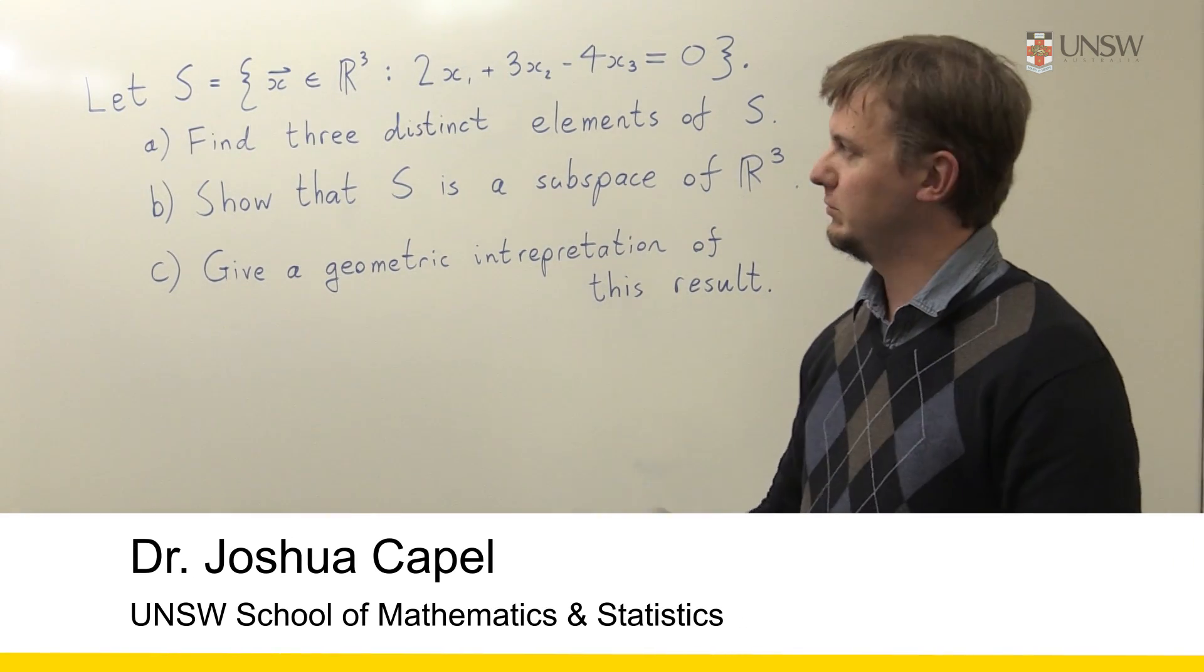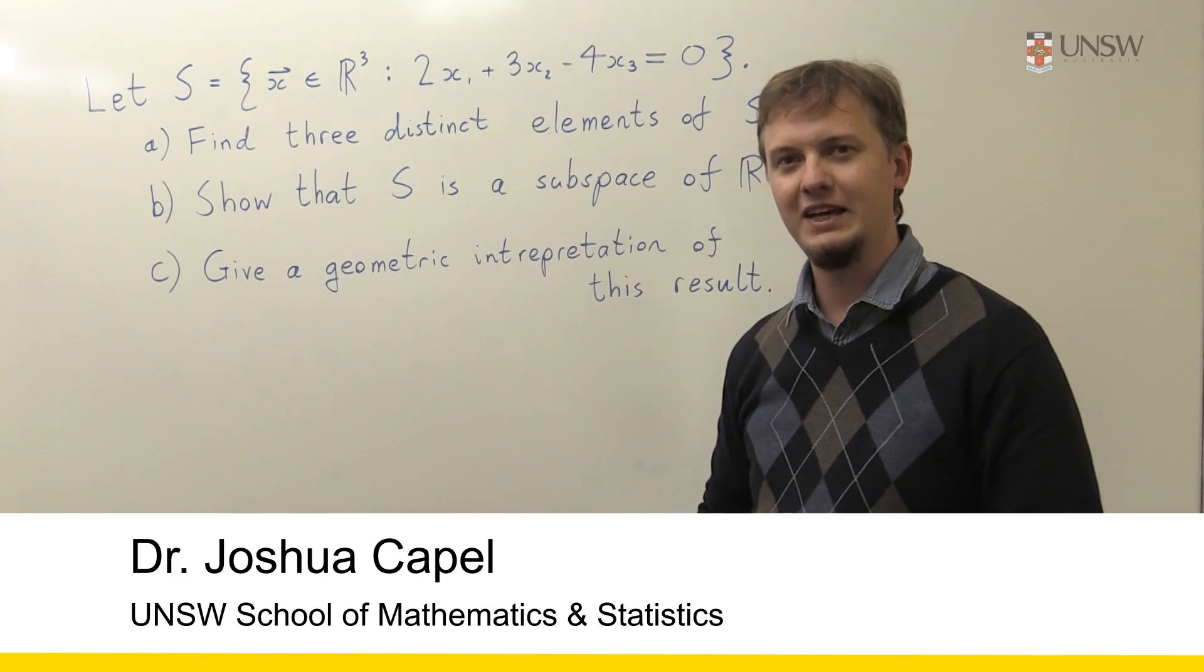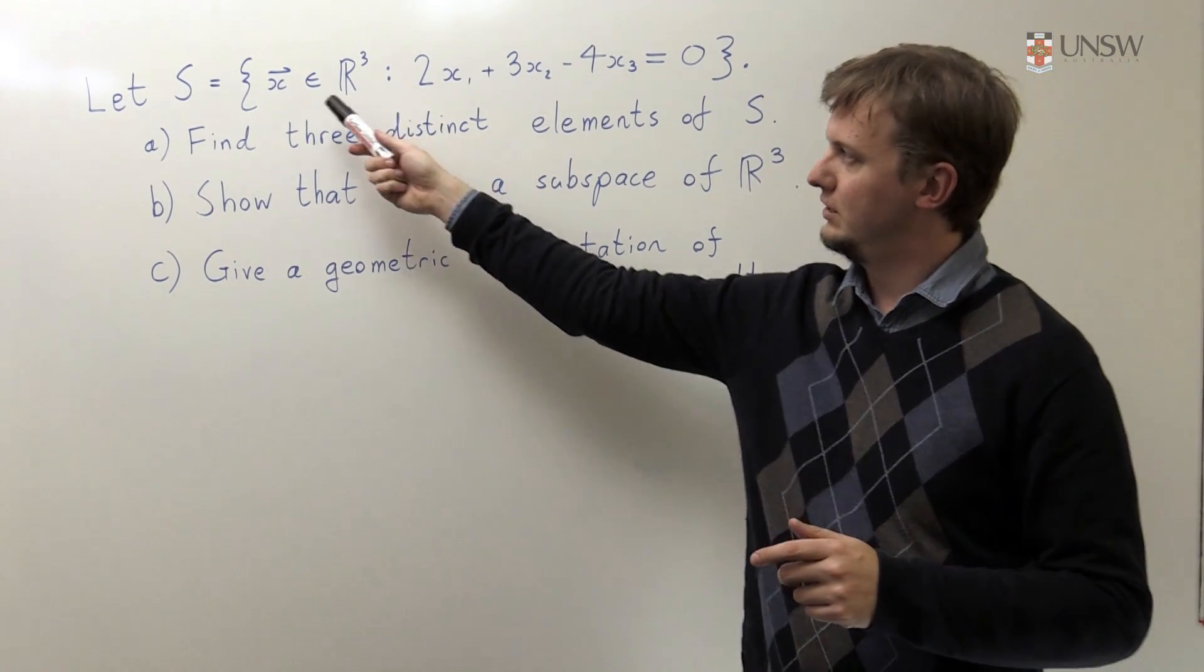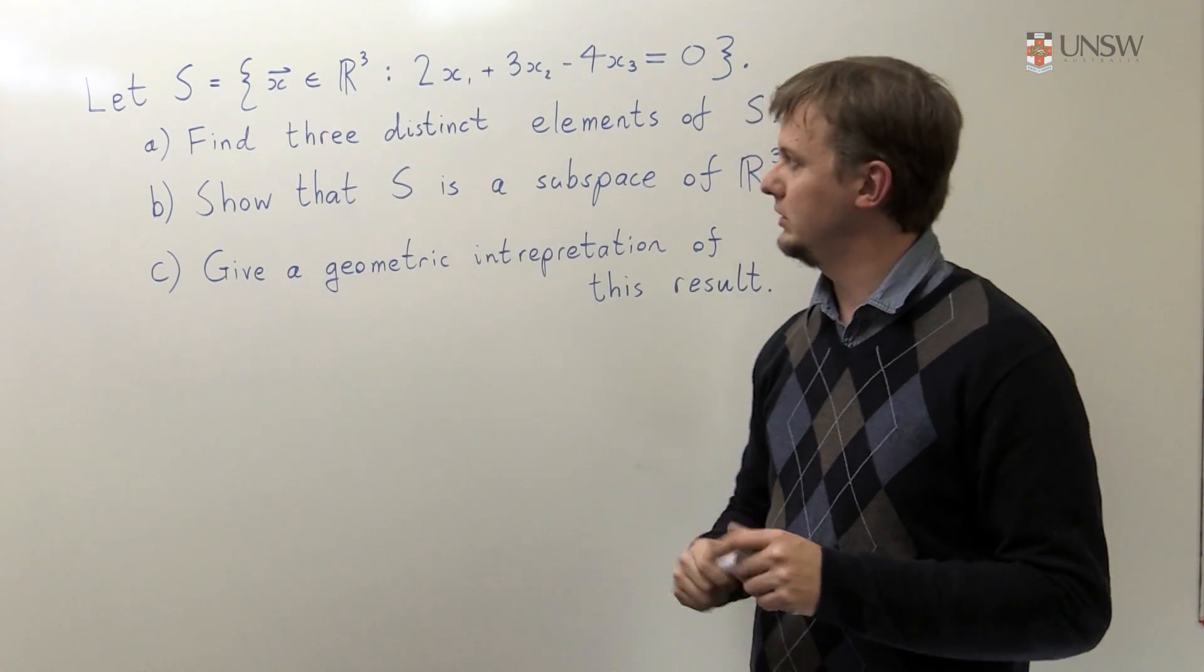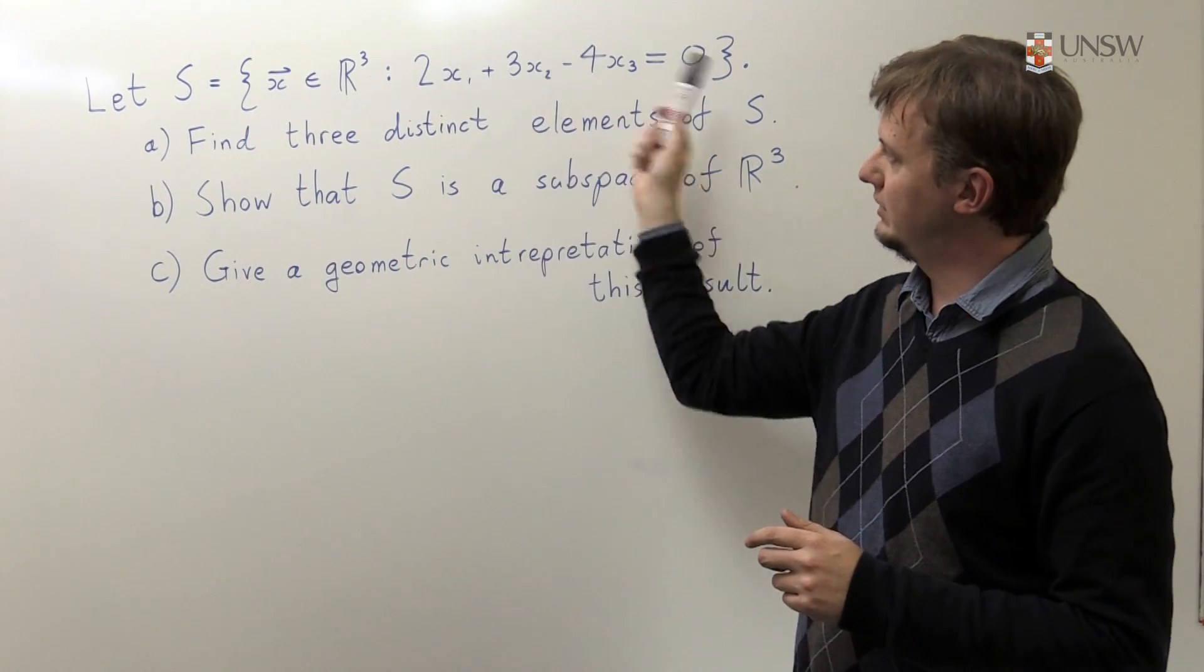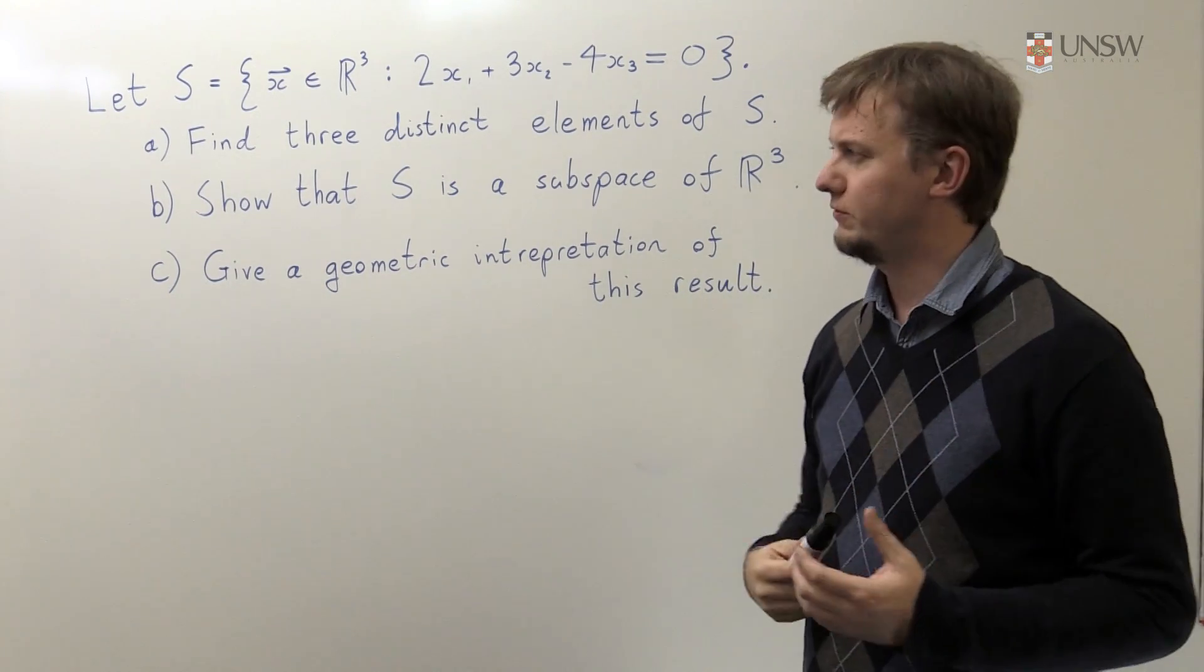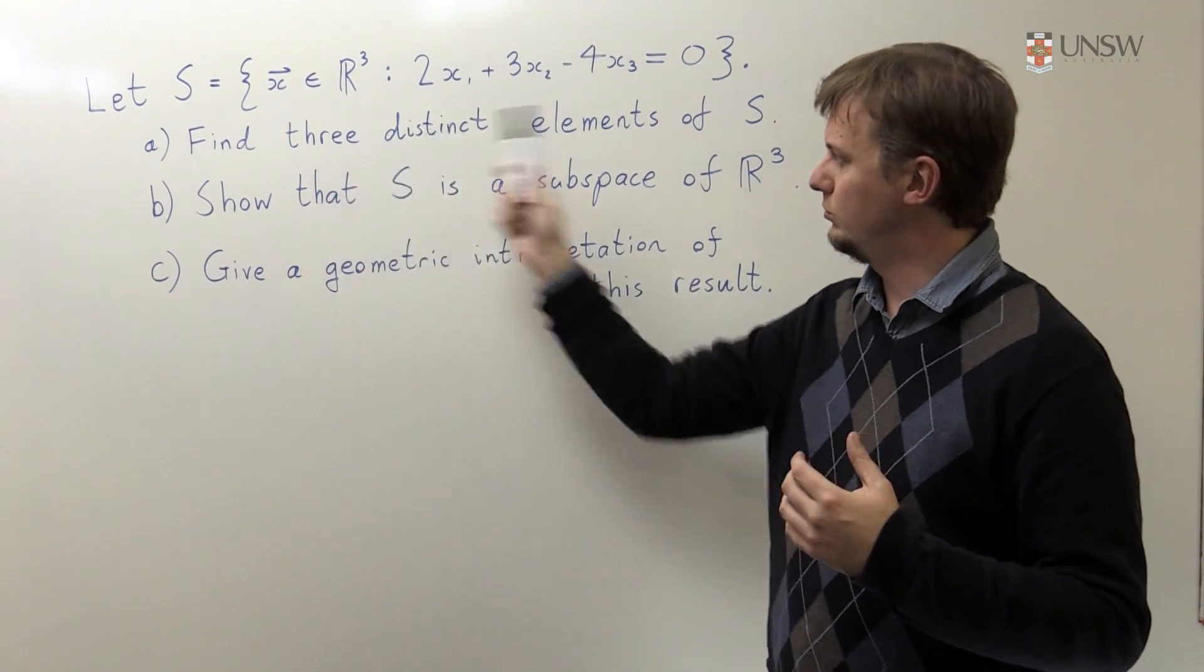Thank you for joining me today. I'm going to show you how to answer this question. In this question we're given a set S, and this set S contains vectors from R³ which all satisfy this condition here, this linear condition in X. Now we're tasked to do three things. We're told that we need to find three distinct elements of S.